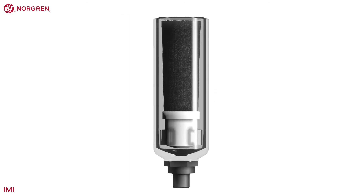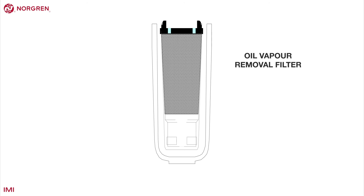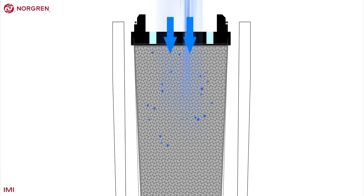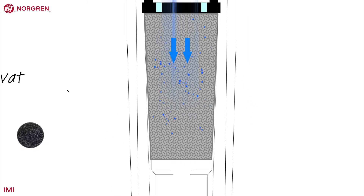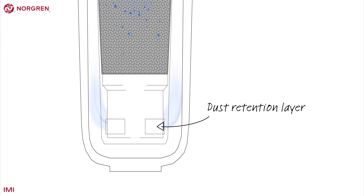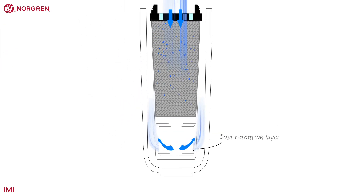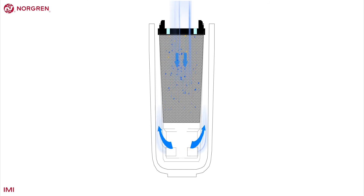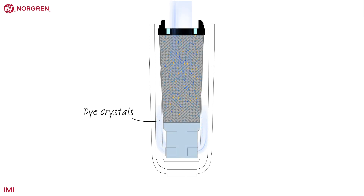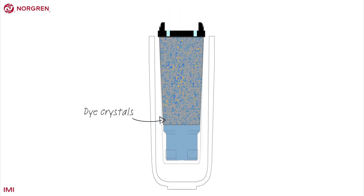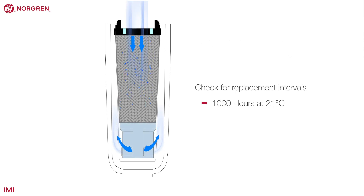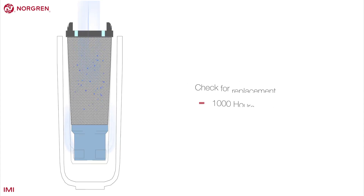An oil vapor removal filter uses activated carbon to extract oil vapor and odors from air. In a similar way to the coalescing filter, air is forced through an element, but this time the element is made of activated carbon that captures the oil particles at a molecular level. Once through the carbon, the air passes through a dust retention layer before exiting. There is no drain required as no liquid will collect. If the filter is exposed to liquid oil, it will no longer function and will need to be replaced. The carbon pack contains dye crystals that turn blue if exposed to these contaminants. If activated, it's important to understand the source of the problem. This element needs replacing rather than servicing. Check for replacement intervals and operating limitations regarding temperature.